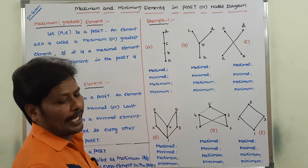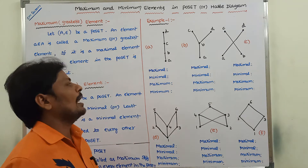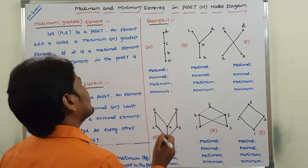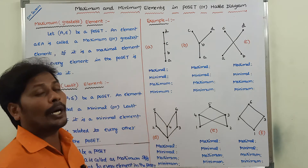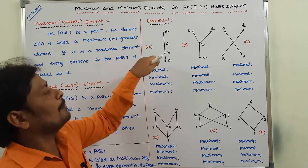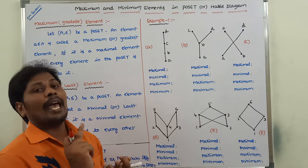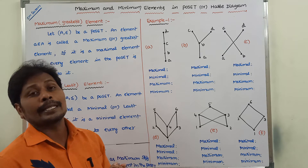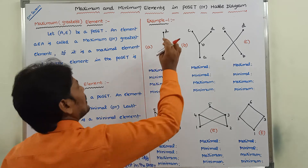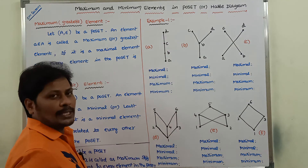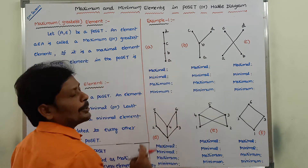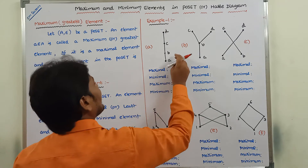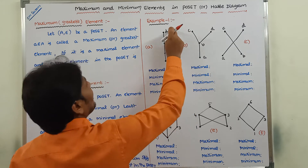Now, observe this diagram. Find out the maximal element and maximum element in these diagrams. Consider this first poset's Hasse diagram. In this Hasse diagram, what is the maximal element? An element is called a maximal element if no element is related to it. Here, element D is not related to C, D is not related to B, and D is not related to A. But A is related to B, B is related to C, and C is related to D.